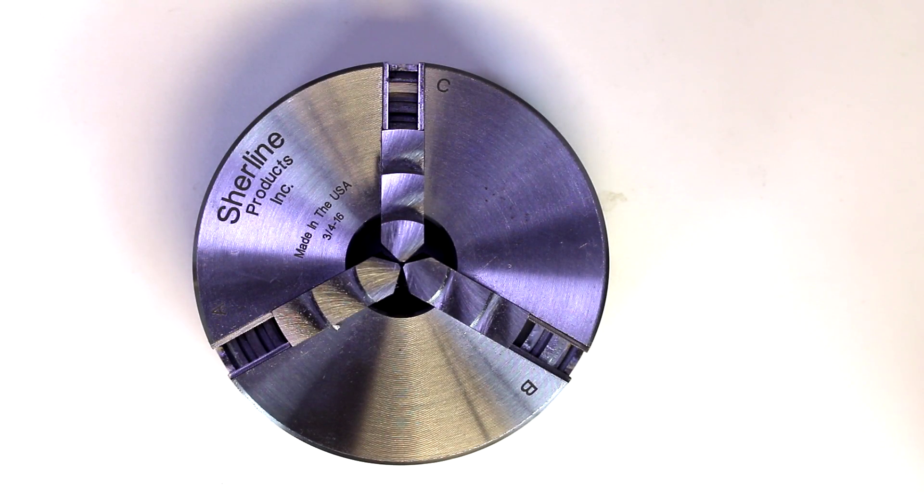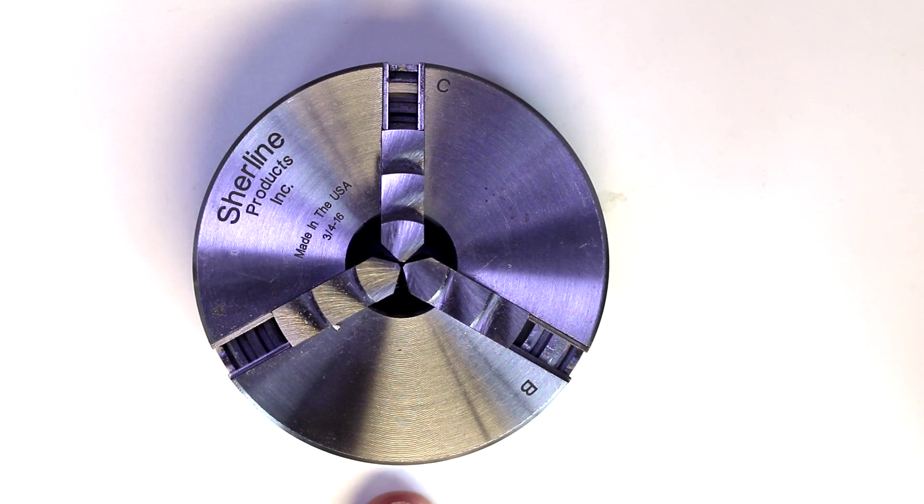We're going to start looking at a series of work holding methods, and one of the first is a three-jaw self-centering or concentric chuck. This is probably the most common day-to-day use for the hobbyist unless you're doing some specific operations. If you don't have this style of chuck, I'd highly recommend that this be one of your first acquisitions.